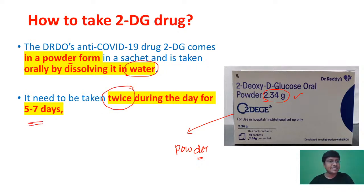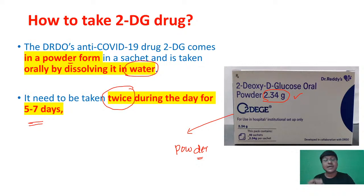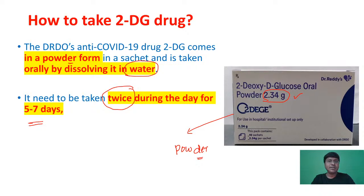Regarding dosage: this drug is available in powder form. Each sachet contains 2.34 grams of 2-deoxy-D-glucose. This powder has to be mixed in water and consumed. The dosage in COVID-19 patients is twice daily — one sachet in the morning, one sachet in the evening — for five to seven days. Because this is a newly introduced drug, DRDO advises not to take it as an outpatient; the patient should be admitted to hospital and take this drug under healthcare surveillance.